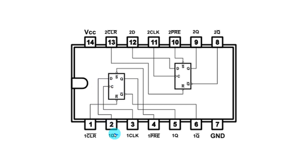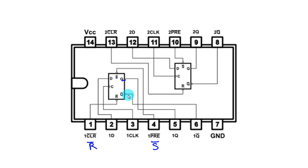The D input is connected to pin number 2. The clock pin is connected to pin number 3. Set is connected to pin number 4 and it is active low. Reset is connected to pin number 1 and it is also active low. So to work with this IC we have to make both the set and reset pins high so that we can use the other pins.